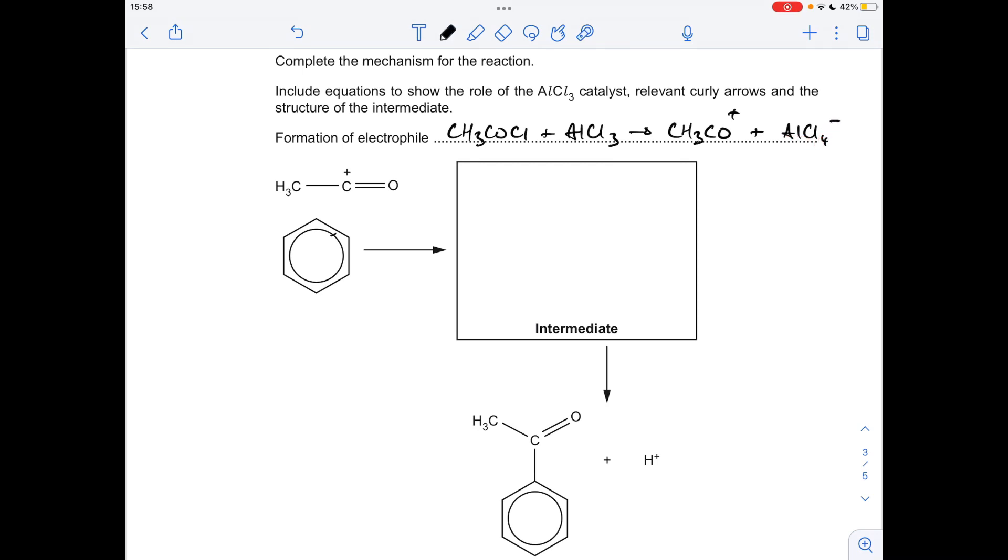Then take a pair of electrons from the delocalising pi electrons to the C+, which is going to give us that intermediate there, and we then take a pair of electrons from the CH bond back into the ring, which is obviously going to give us the organic product and this H plus ion.